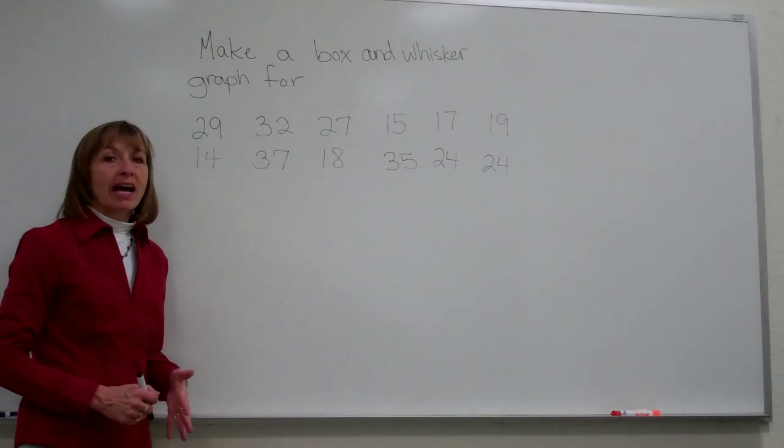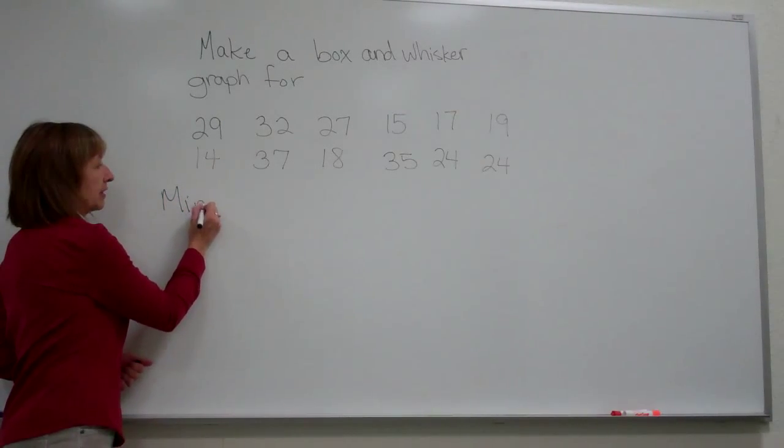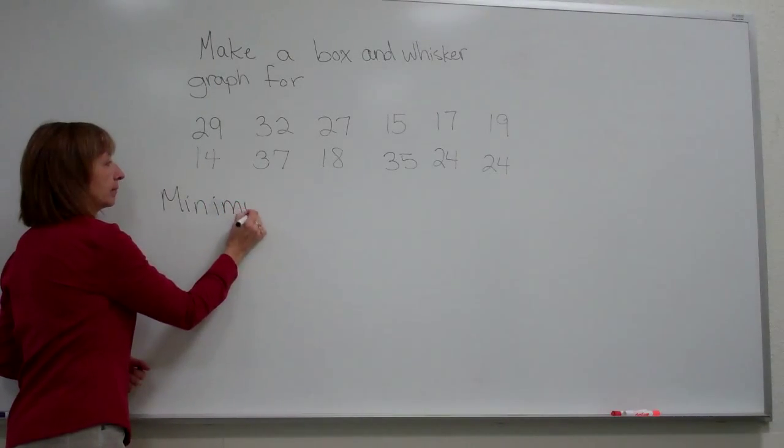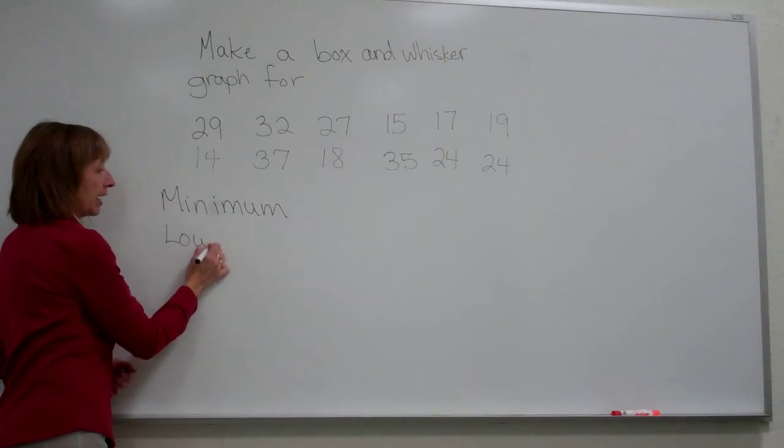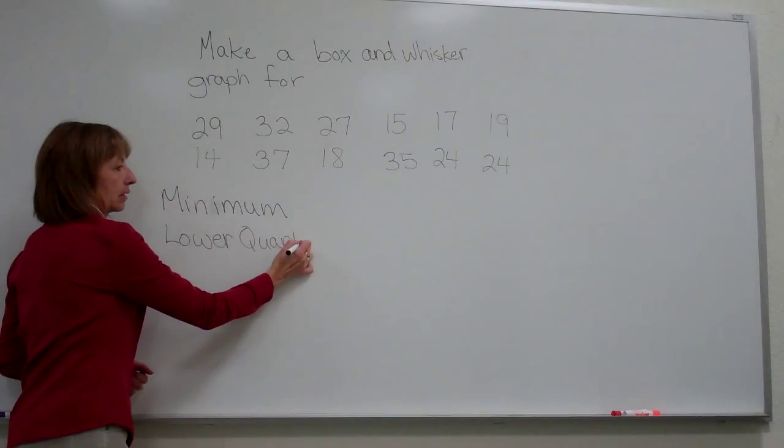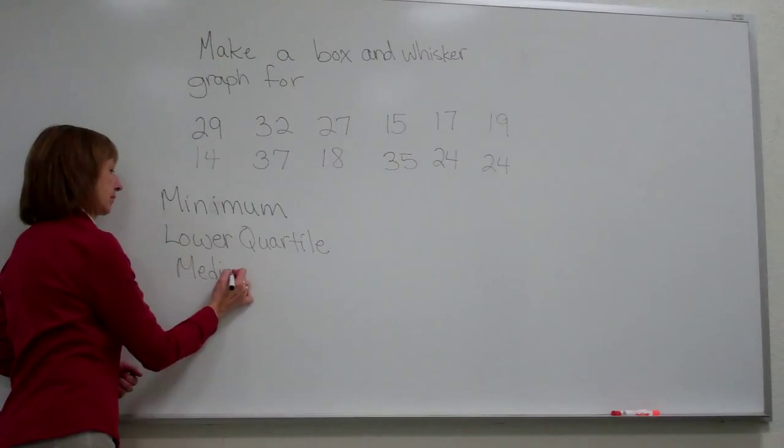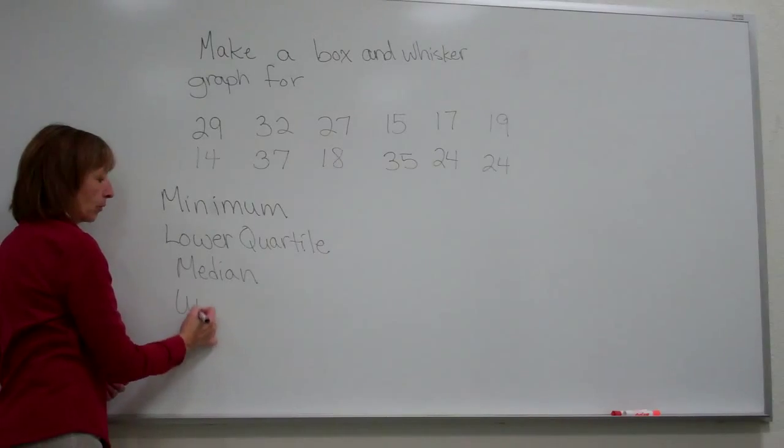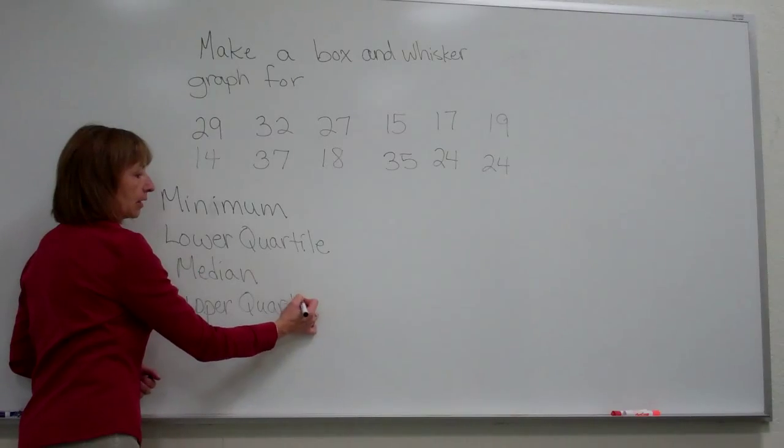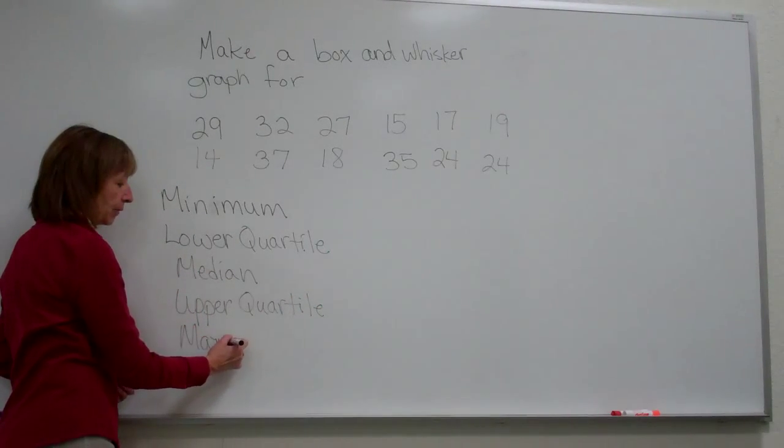With the box-and-whisker graph, we want to make sure that we have five key values from the data set. We want the minimum value that the data set has, the lower quartile, the median, the upper quartile, and then the maximum value that we have in our data set.